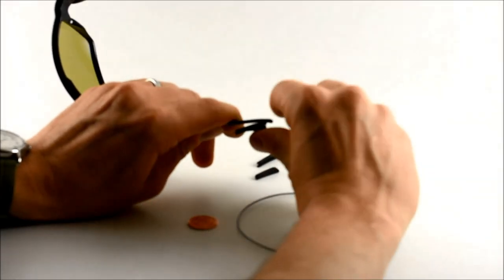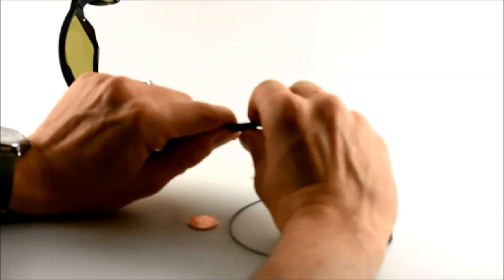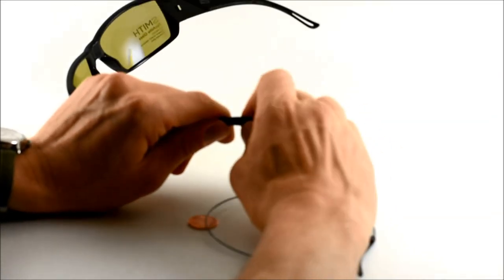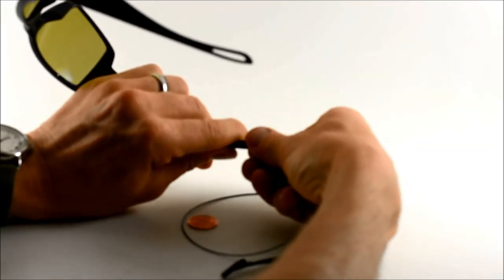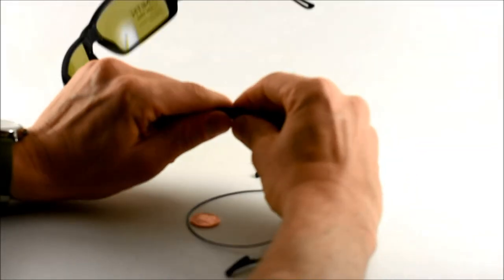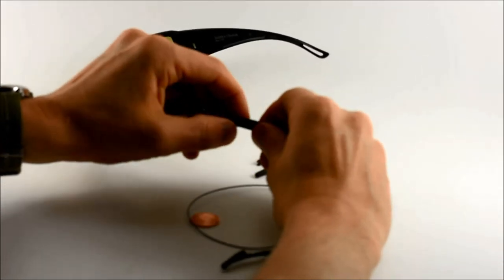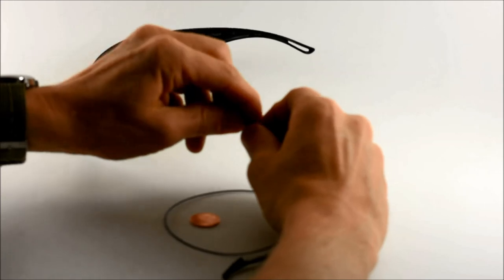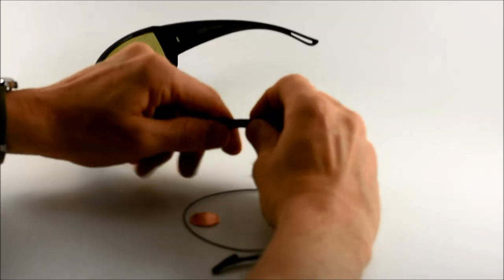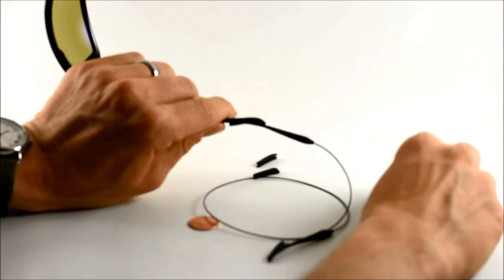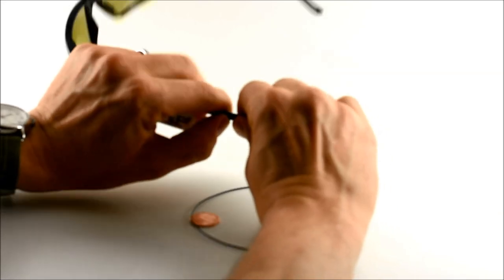So you're going to push it with your thumb or whatever appendage works best for you. Push it in there until it kind of pops through the other side. It'll take a little bit of work, just a little bit of knuckle grease. Once that's in there you kind of pull it back and push it in.